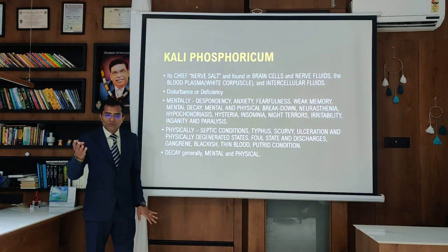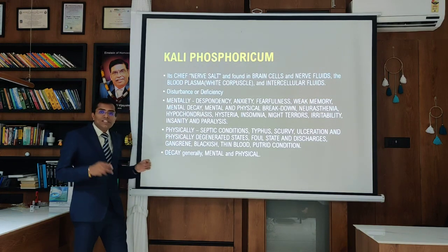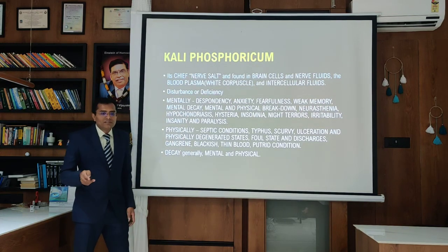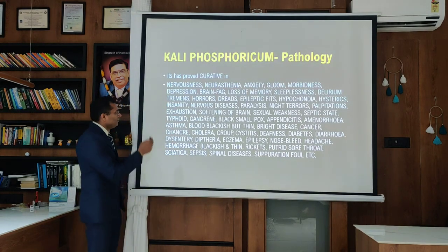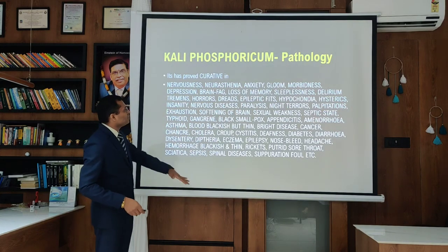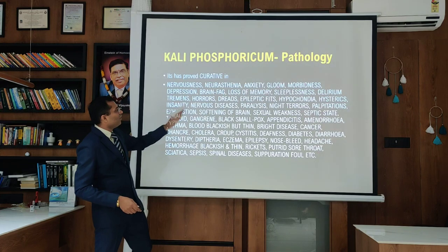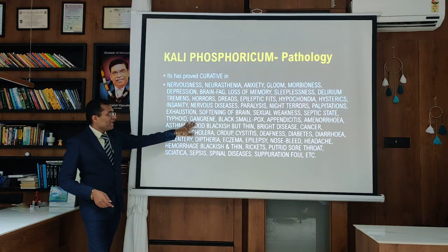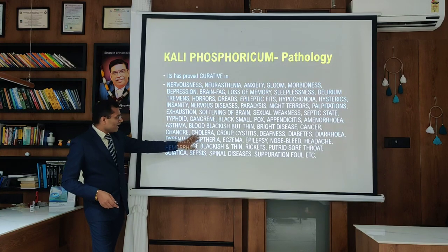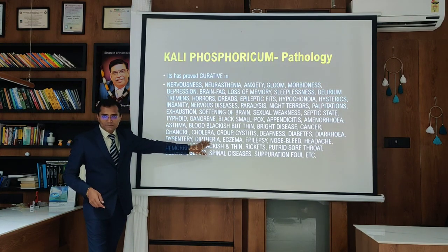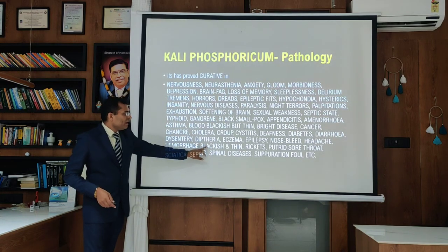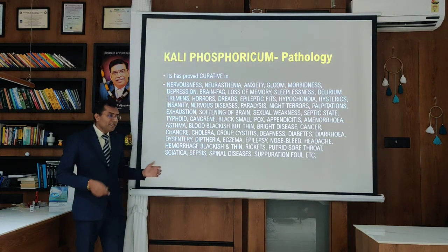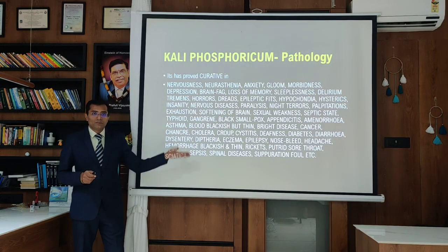To summarise the menses differentiation in biochemics: menses blackish and thin — Kali Phosphoricum; menses dark and clotted — Kali Muriaticum; menses bright red — Ferrum Phosphoricum; menses pale and thin — Natrium Muriaticum. Kali Phosphoricum produces softening of the brain, sexual weakness, septic conditions, mental derangement, nervousness, dread, horror, nervous paralysis, night terrors, palpitations. In the physical sphere: gangrene, blackish discharge, cholera, croup, diphtheria, foul suppuration with blackish discharge. It is the decay remedy at both mental and physical level.